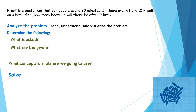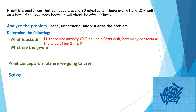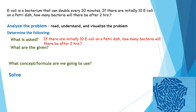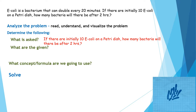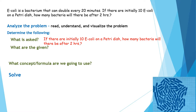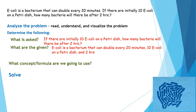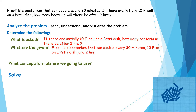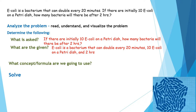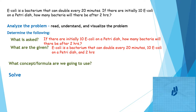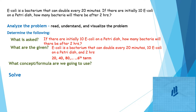After analyzing the problem, we determine what is asked: how many bacteria will there be after two hours given 10 E. coli initially? The given information includes: E. coli bacteria doubles every 20 minutes, there are 10 E. coli in a petri dish, and the time is two hours. By analyzing the given, you can create a geometric sequence: 20, 40, 80, up to the sixth term.